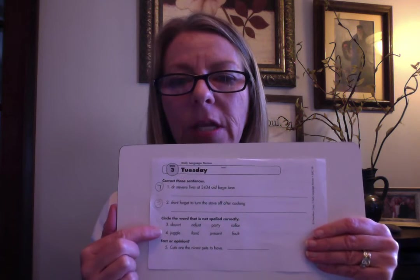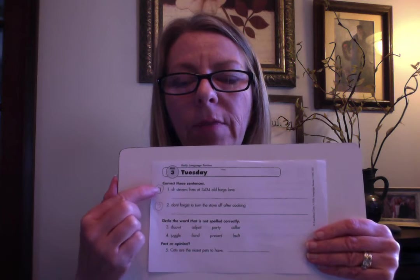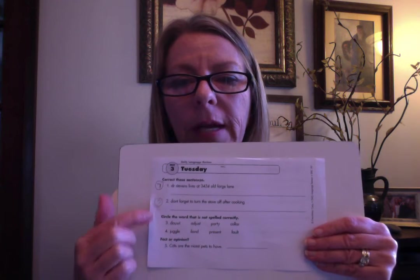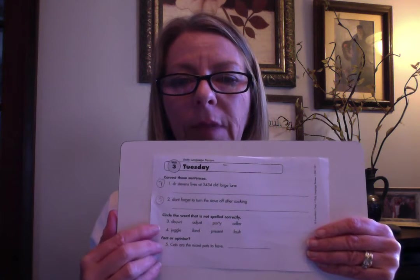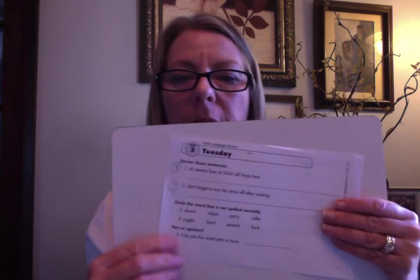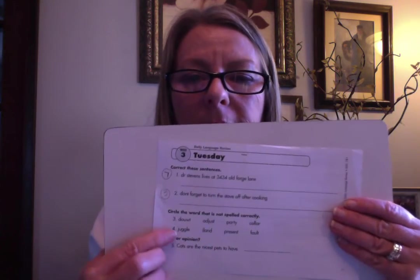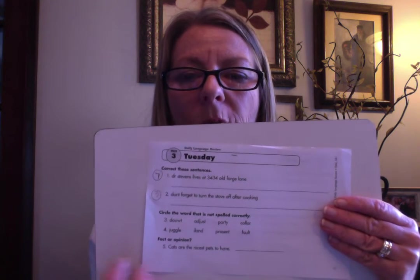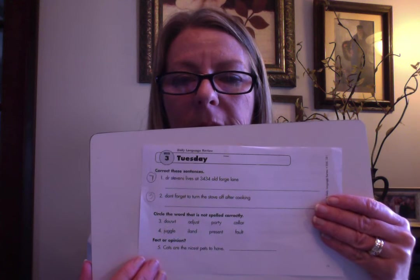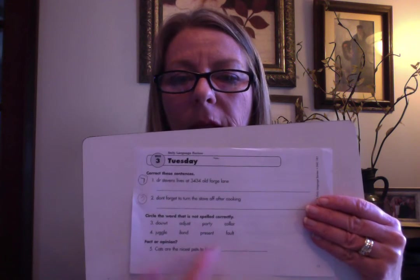And then the next section — go ahead and write seven and three on here so you know what you're looking for. And then we're going to circle the word that is not spelled correctly. So there are four words here — three of them are correct and one is not correct. So circle the one that is not correct. Same with number four — you've got three that are correct and one that is not.